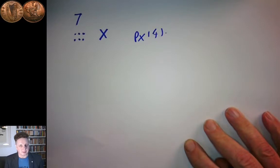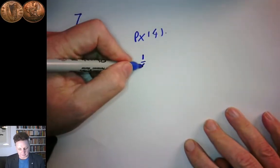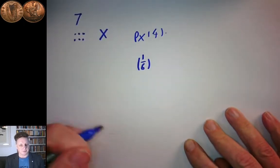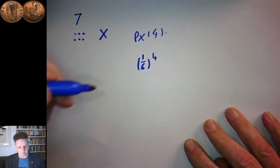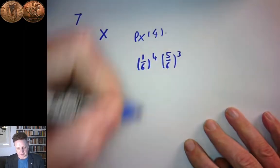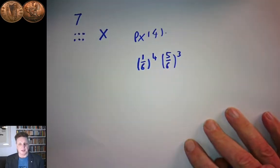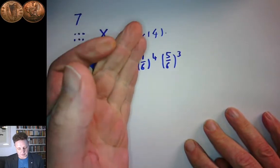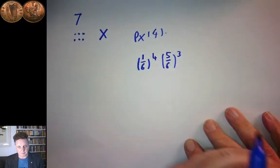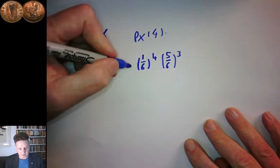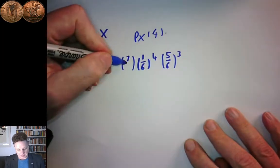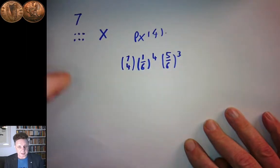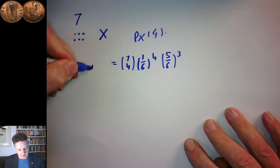We're well set up for doing that now. Imagine that the four sixes come at the start. The probability of a six is one over six — there are six different faces to the dice — and we're asking that we get four of them in a row. Then after that, we get three not-sixes, and the probability of a not-six is five over six. So the probability of four sixes in a row is one over six to the power of four, followed by three not-sixes, five over six to the power of three. And of course, we're not interested in just that arrangement — there are seven choose four different possible arrangements of where the four sixes are. And that's P(4).